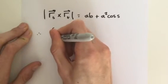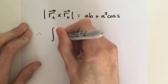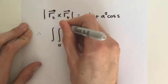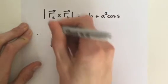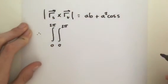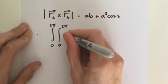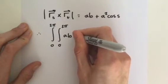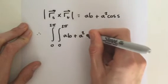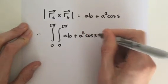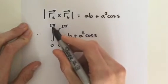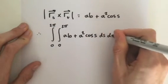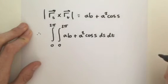So we do the double integral. s goes from 0 to 2π, and t goes from 0 to 2π. And we simply integrate the magnitude of our cross product, which was ab plus a squared cosine of s. The order of integration doesn't matter because the limits are exactly the same. I'm just going to do ds by dt.